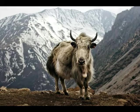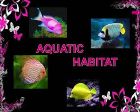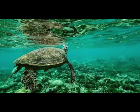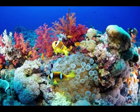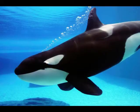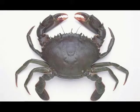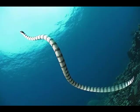Aquatic animals are those that live entirely in water — jo animals only and only inside water rehete hain, us animals ko aquatic animals bola jata hai. They live in oceans, lakes, rivers and ponds. For example, fishes, starfish, corals, whales, sea snakes, dolphins and water birds are aquatic animals. These animals live only in water, not on land.